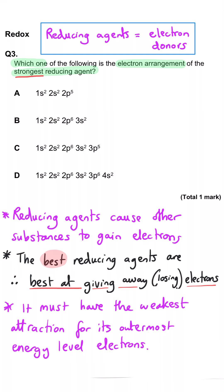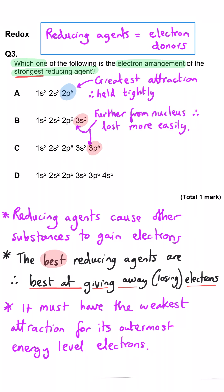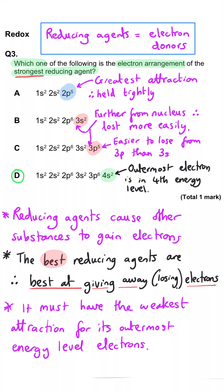In A, the outermost electrons are in the second energy level, so they will be held onto very tightly. In B and C, the outer electrons are in the third energy level, but in C they're in a P subshell, so that's higher energy still — C is the better reducing agent of those two. But in D, the outer electrons are in the fourth energy level, held onto very weakly, so D is the best reducing agent.